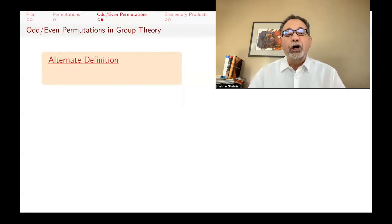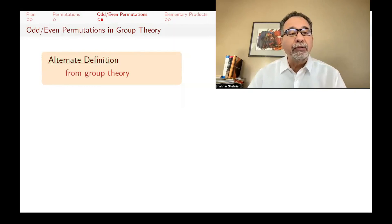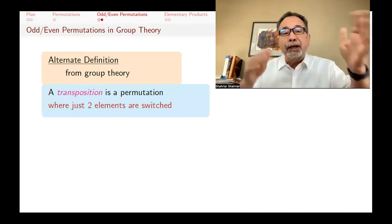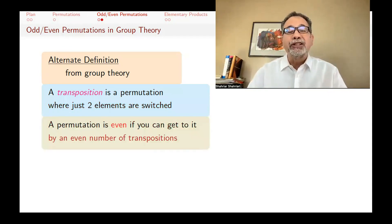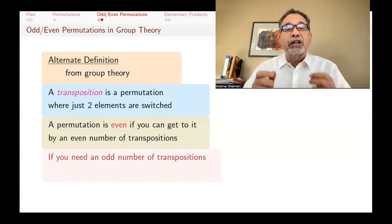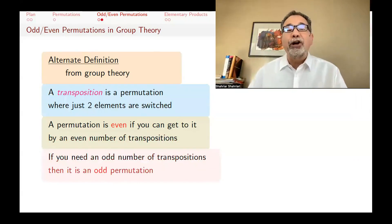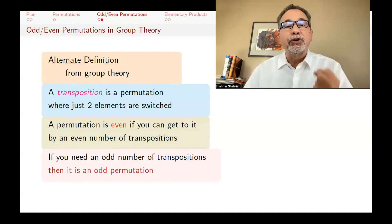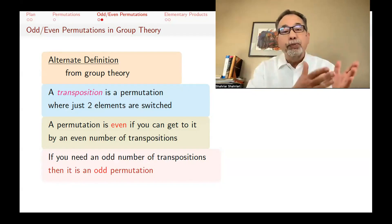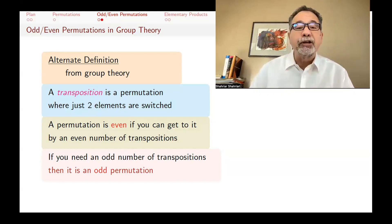As an aside, you can define odd and even permutations differently. In group theory, one defines them using transpositions — a permutation where you switch the place of just two elements. A permutation is even if you can get to it by an even number of transpositions, and odd if you need an odd number. With this definition, you need to prove — and it's not easy — that no permutation is both even and odd. We won't use this definition here, but it appears in my group theory lectures.